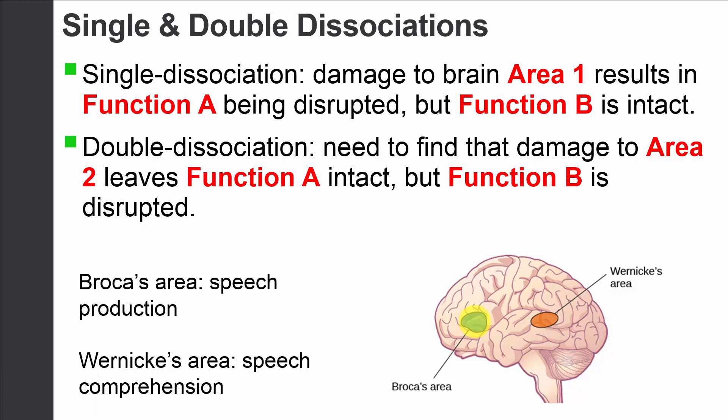The beauty of the double dissociation comes in when we put these two pieces of the puzzle together. We find that there are two different brain areas with very specific functions when it comes to speech. In Wernicke's area, damage only to comprehension but not speech production suggests it is localized for speech comprehension. When we combine Broca's and Wernicke's data, damage to Broca's area affects speech production but not comprehension, so the ability to produce speech is localized to Broca's area. This is the idea of a double dissociation.